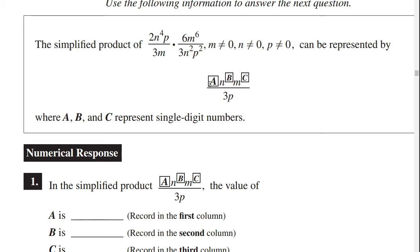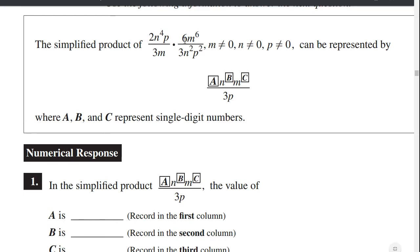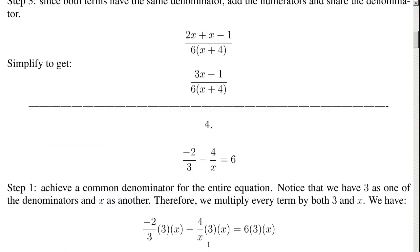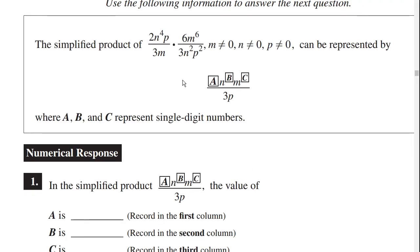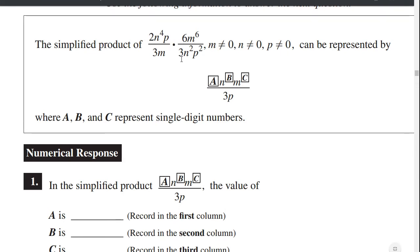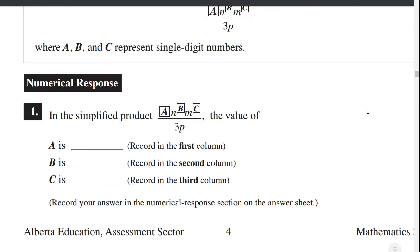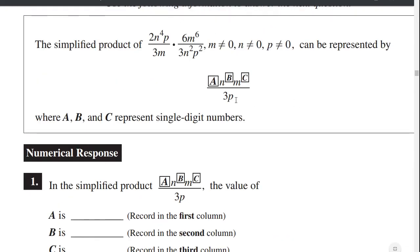What's a? a refers to the numerical coefficient. You have 2 times 6 divided by 3 divided by 3. They're giving us the 3 in the denominator already, so we can ignore one of those 3s. 2 times 6 is 12, divided by 3 is 4. So a equals 4.